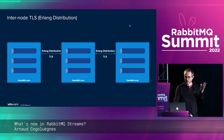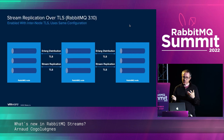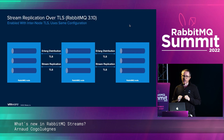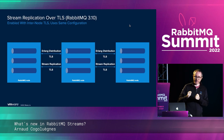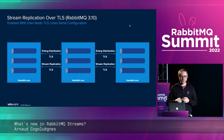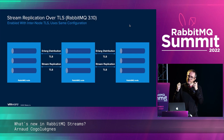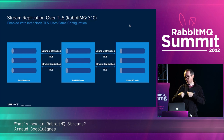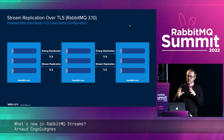That Erlang distribution TLS has been there for a long time. What we added specifically was TLS for stream replication. Streams do not use the Erlang distribution for replication — quorum queues do — but for optimization, streams use regular TCP connections. So if you enable internal TLS, the stream system will automatically detect this, use the same configuration with certificates, private key, and CA, and secure stream replication over TLS automatically.